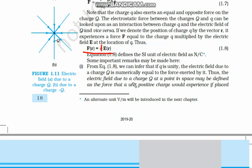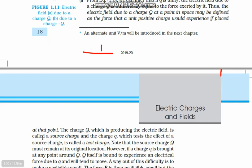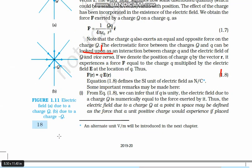Thus the electric field due to a charge Q at a point in space may be defined as the force that a unit positive charge would experience if placed at that point inside this field. This is the force that a unit positive charge feels when we place that charge into the field.